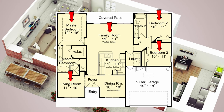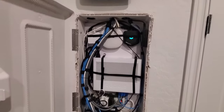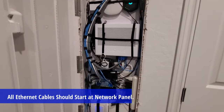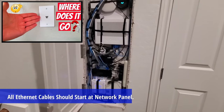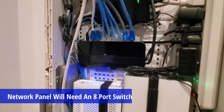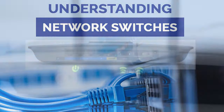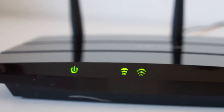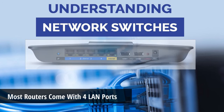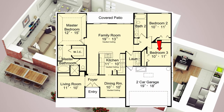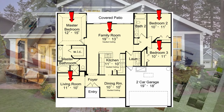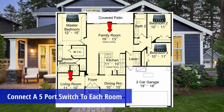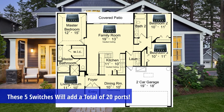So now we have five Ethernet cables going to five different rooms, and these five cables should originate from a network panel. In this network panel, you should have an eight-port or ten-port switch. Since most routers only have four LAN ports, you will definitely need a switch since you have five Ethernet cables to connect. To optimize this connection, you should connect a five-port switch to each room — this gives you four more ports per room.